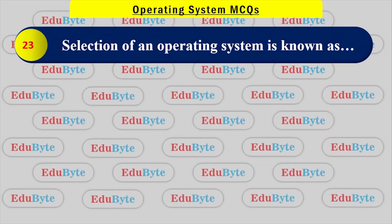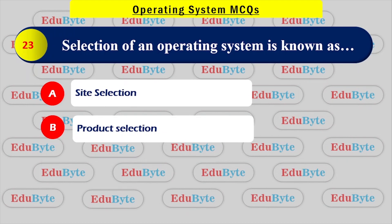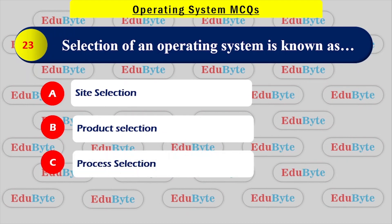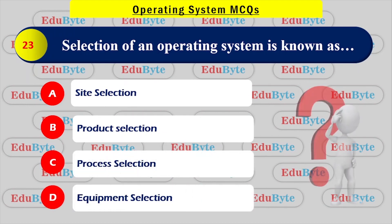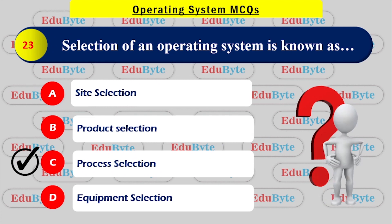The selection of an operating system is known as what? Options: product selection, analysis, process selection, equipment selection. The correct answer is process selection — choosing an OS is called process selection.